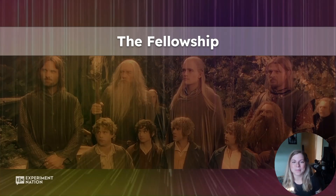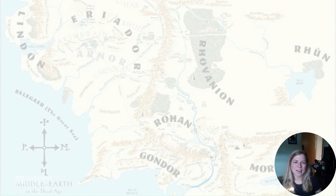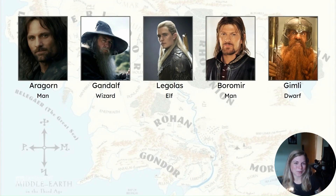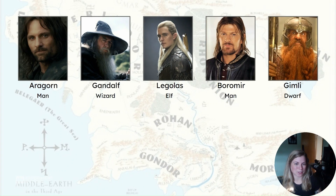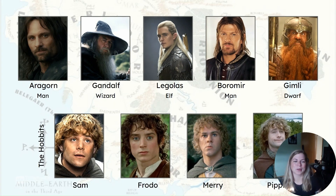To avoid setting Frodo up for failure, a fellowship is created to accompany Frodo on this journey. The One Ring must be destroyed in the fires of Mount Doom, and the journey to get there is treacherous for anybody, let alone a lone hobbit. So let's meet our fellowship. First, we have Aragorn, the noble ranger and future king — spoilers. He leads with courage. Then we have Gandalf, a wise wizard who guides the group with his magic. Alongside them are Legolas the agile elf, Boromir the conflicted warrior, and Gimli the strong dwarf. Of course, our fellowship would not be complete without our hobbits — Sam, Frodo, Merry, and Pippin — each of whom contribute their unique strengths and spirit to the quest.